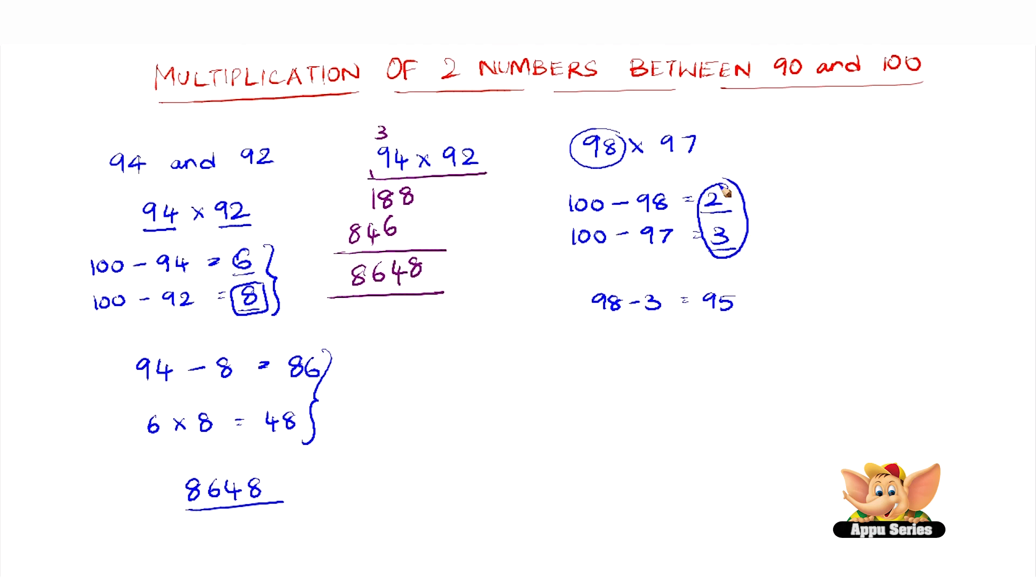Now multiply these two numbers, that is 2 into 3 which is 6. But here we are not supposed to write only 6. We have to place a 0 before 6 if it is less than 10. Now just combine these two, and here we go, it is 95 and 06. So 9506 is the answer of 98 into 97.